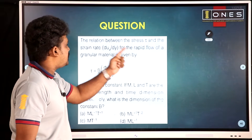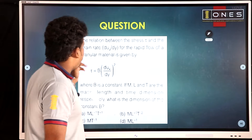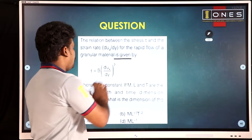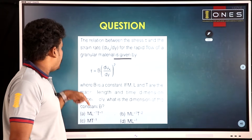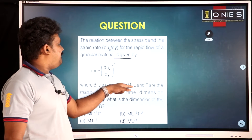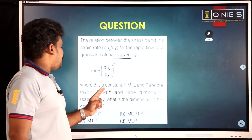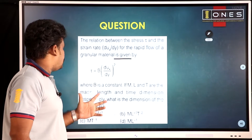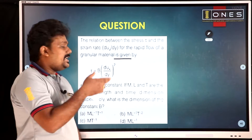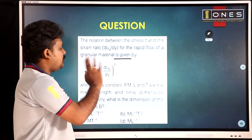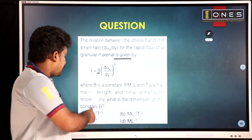The relation between shear stress and shear strain for the rapid flow of granular material is given by tau equal to b into (du/dy) the whole square, where b is a constant. If M, L, T are mass, length, and time dimensions respectively, what is the dimension of constant b in the relation tau equal to b into (du/dy) whole square?